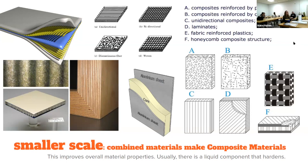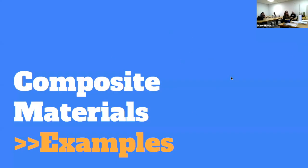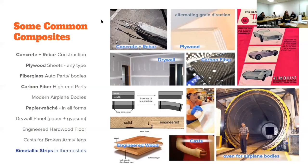Some specific examples of composite materials in your everyday life: concrete and rebar is the one that's everywhere all the time. The rebar is really good at stretching and keeps the concrete from cracking when it would be in tension, and the concrete itself is good at compression — good at being pushed on and having things weighing on it.